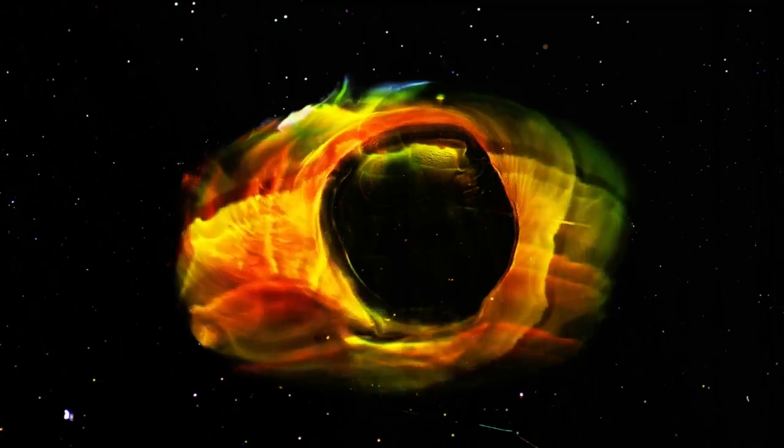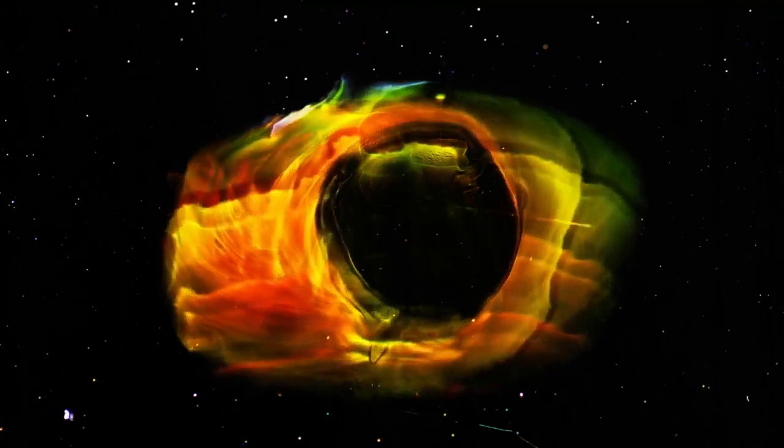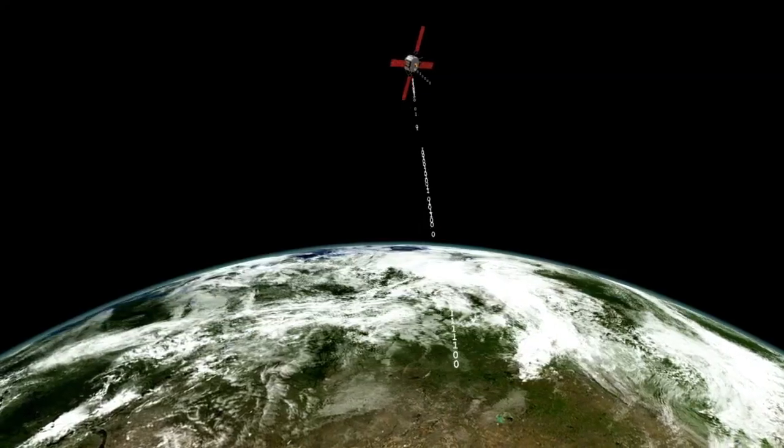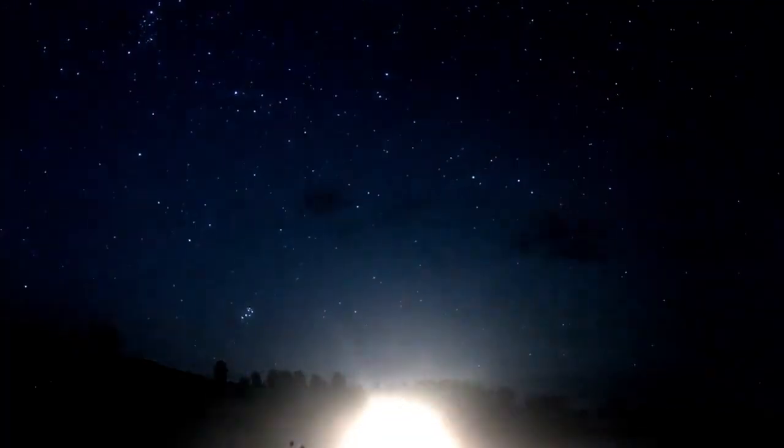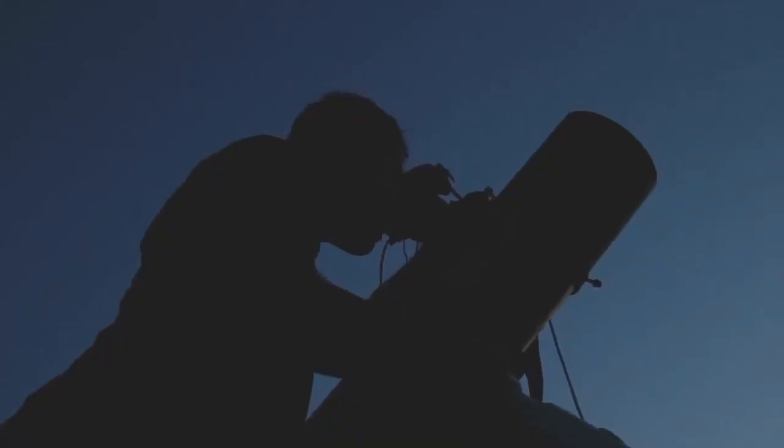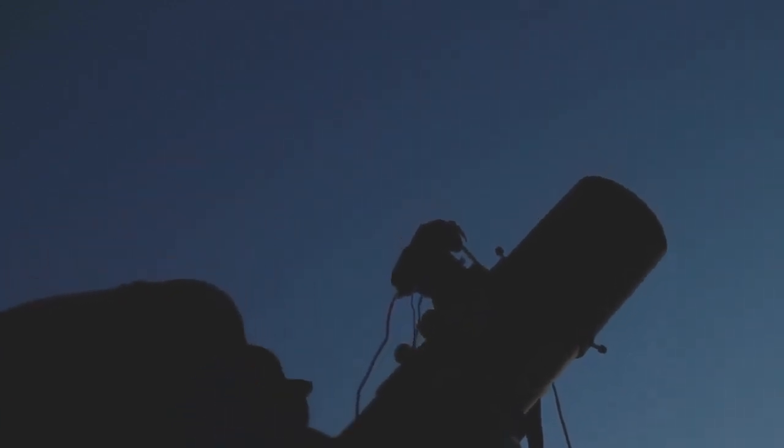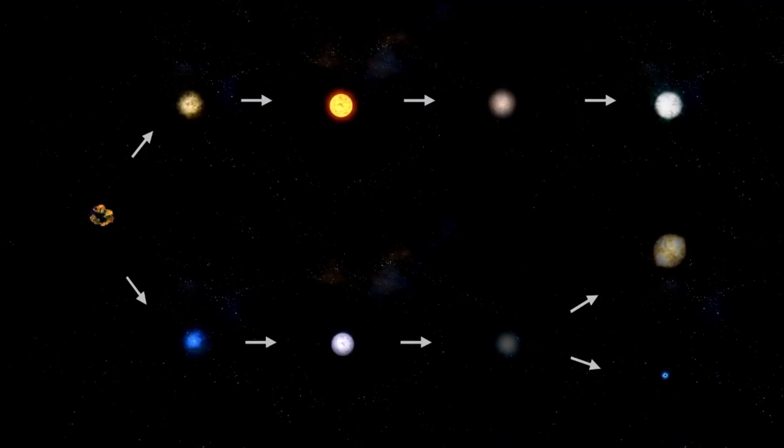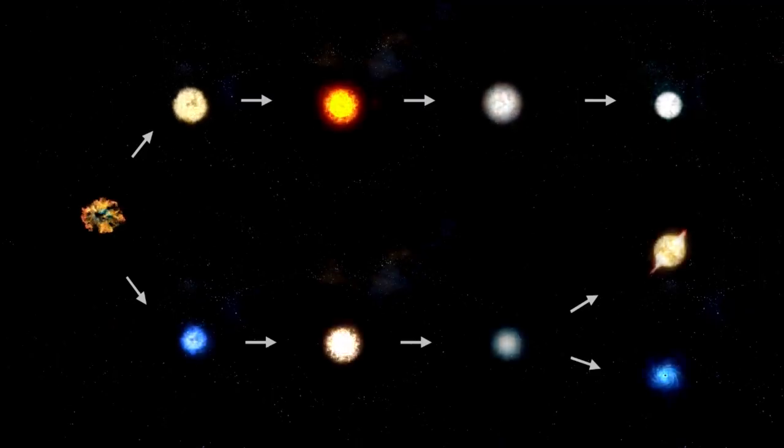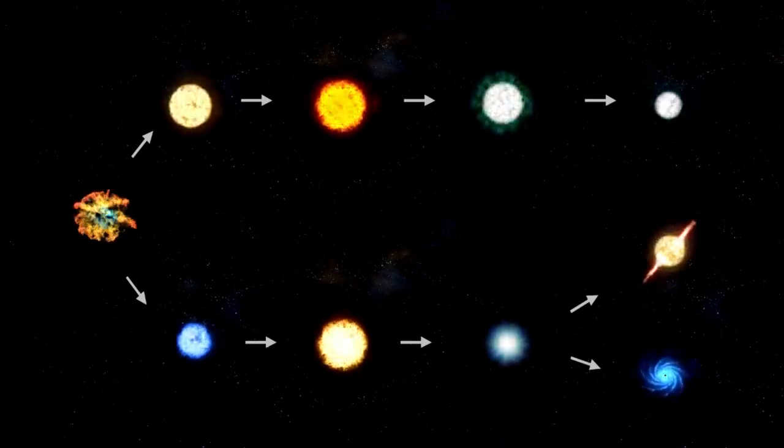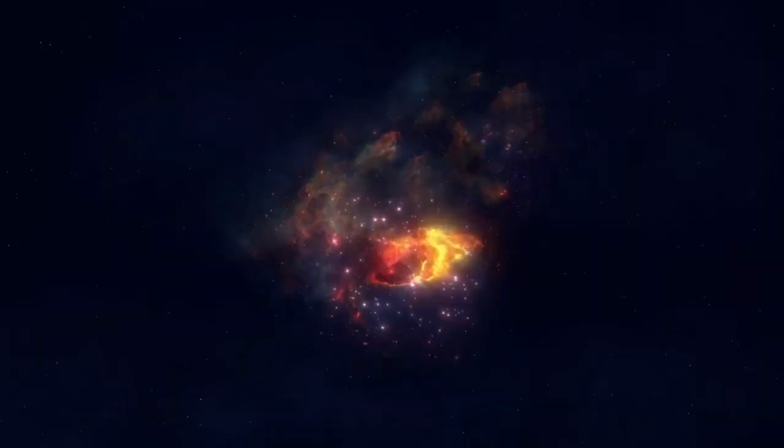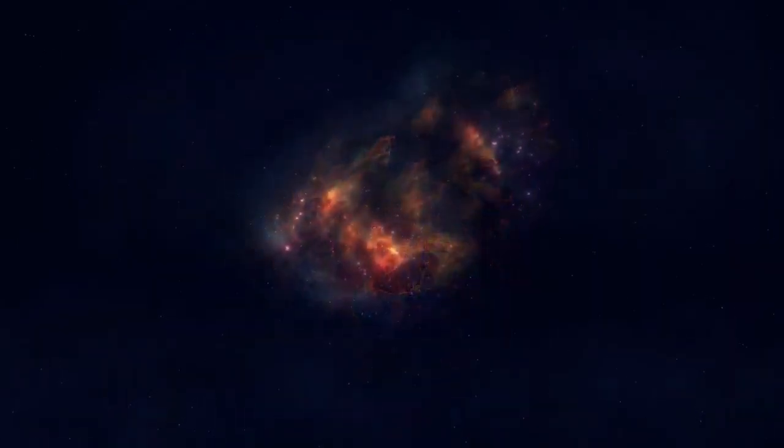Betelgeuse, often referred to by astronomers as Alpha Orionis, is a massive red supergiant star located in the Orion constellation. It is one of the largest stars visible to the naked eye, with a size that dwarfs our own Sun. In fact, if Betelgeuse were placed at the center of our solar system, its outer edges would extend past the orbit of Jupiter, making it an incredibly vast and powerful object. Despite its immense distance from Earth, roughly 724 light-years, the star's sheer size and luminosity make it an important subject of study.